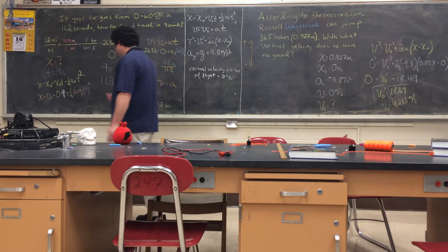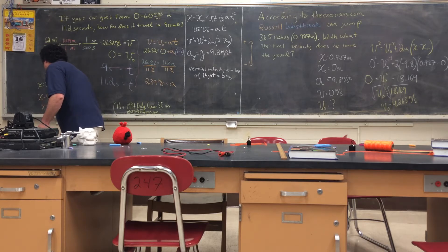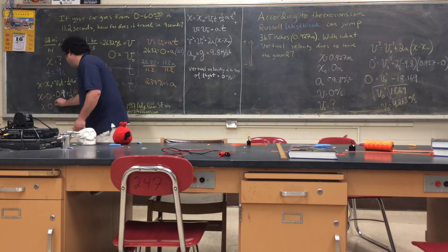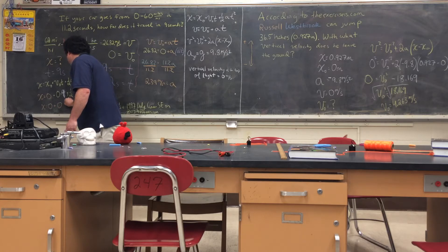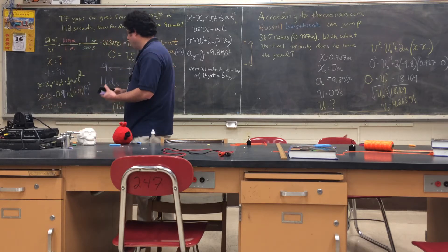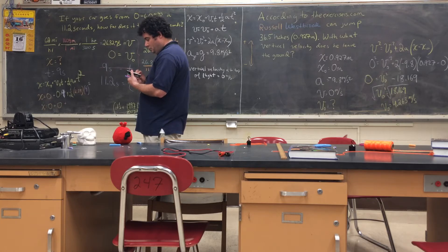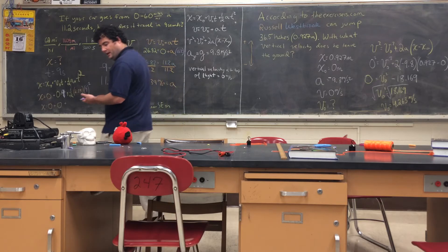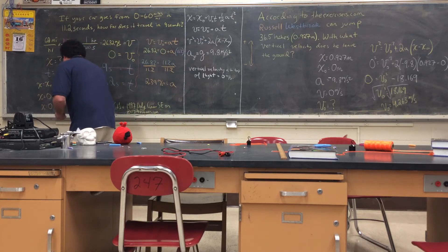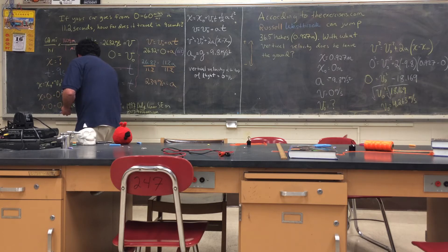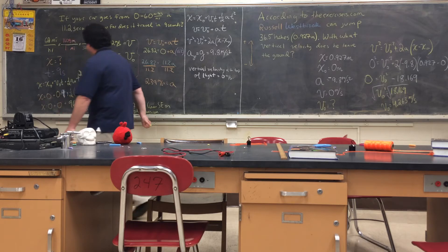So now we just solve that. So x equals zero. Nine times zero is zero. Plus, if we square nine, nine times nine is 81, times 2.39. And all that divided by two. 96.8 meters. So x is 96.8 meters, or about a football field.